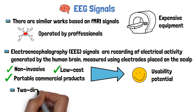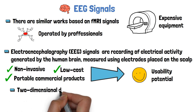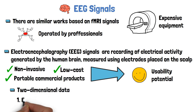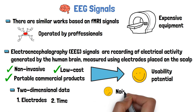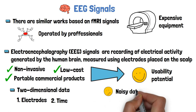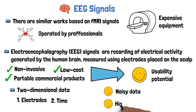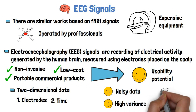EEG data is two-dimensional, where one dimension represents the electrodes and the other dimension represents the time. EEG data tends to be noisy and have high variance, which is influenced by factors such as age and sleep.